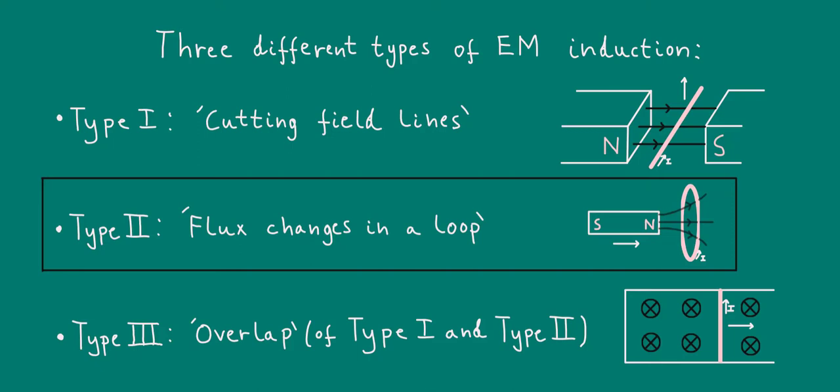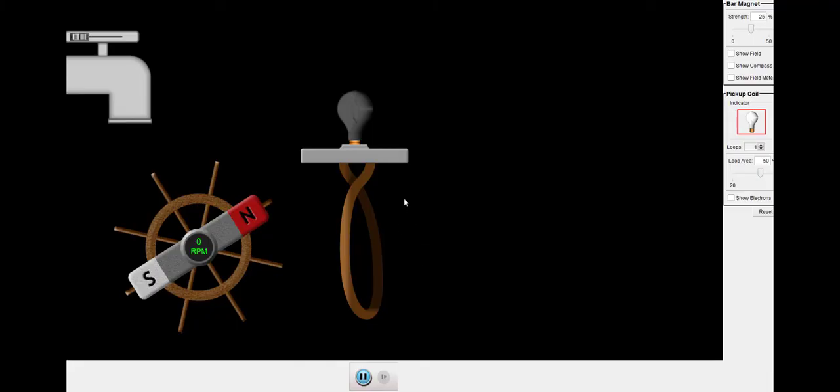Let's now take a look at the simulation. What we have here is a loop of wire connected to a lamp, bar magnet attached to a wheel, and a water tap. When I move this slider, water will fall from the tap and spin the wheel and magnet. Before I turn the tap on,